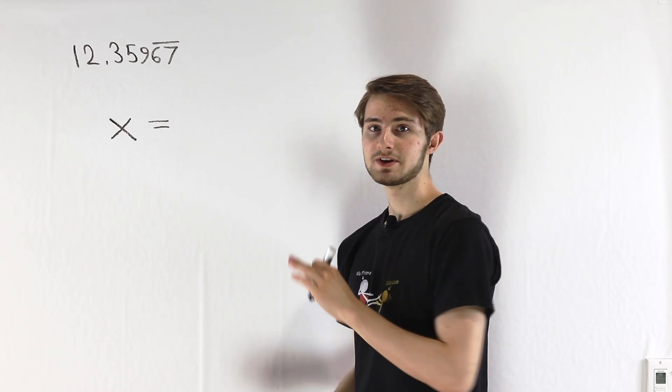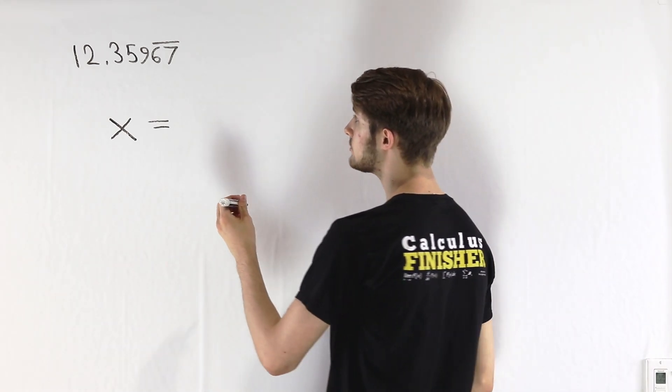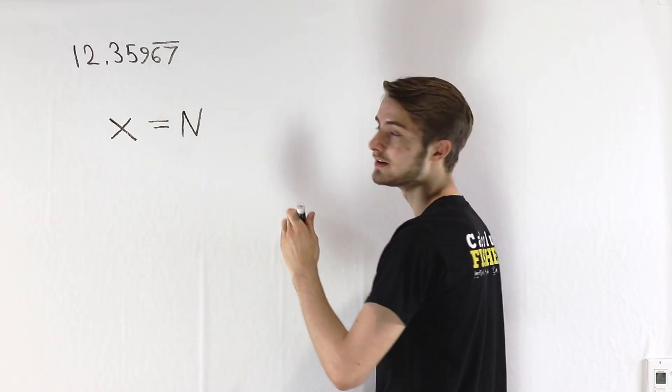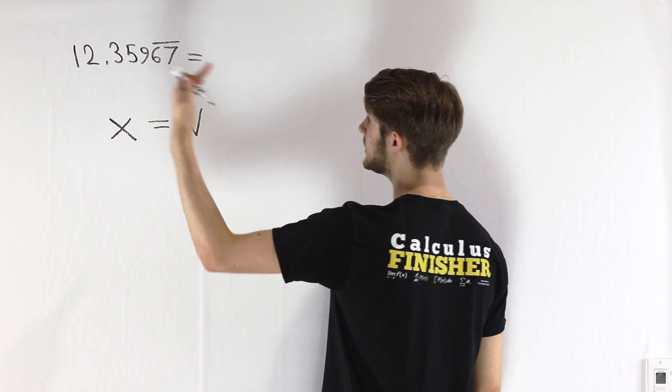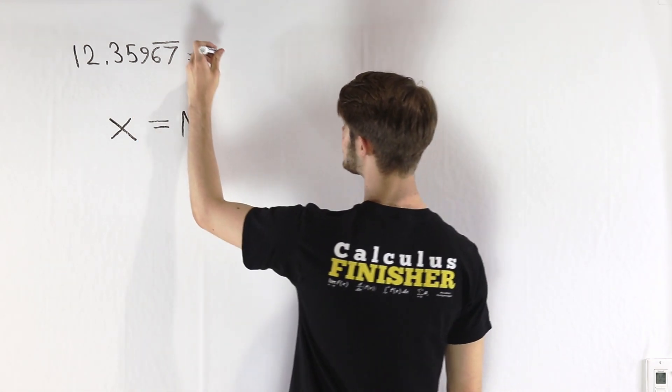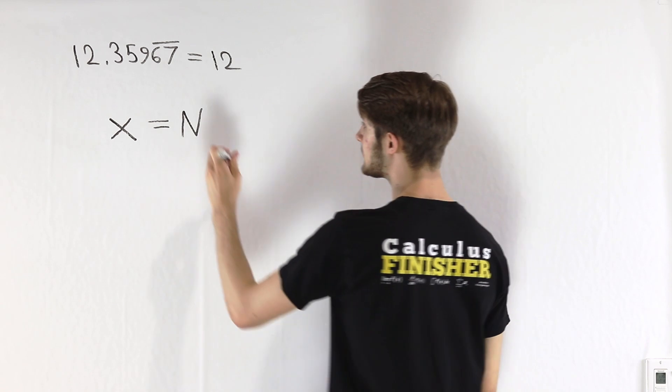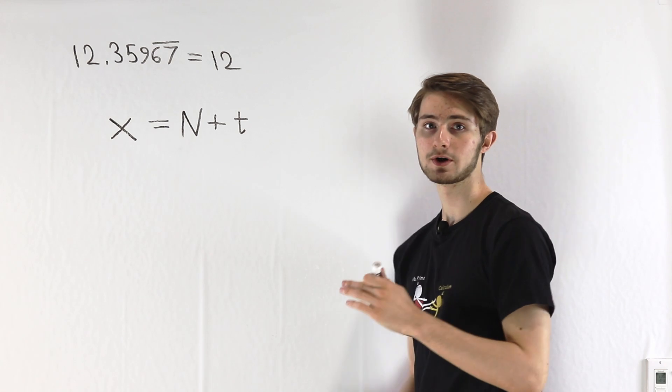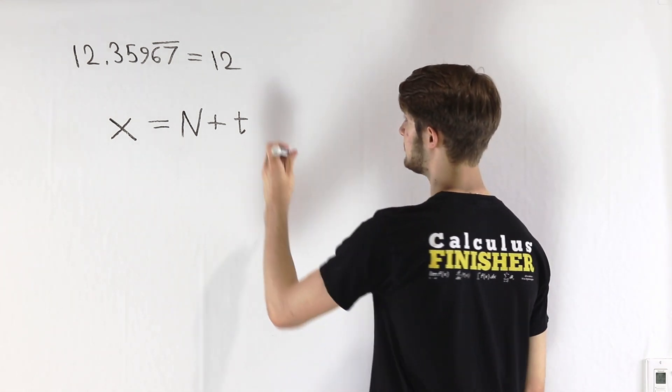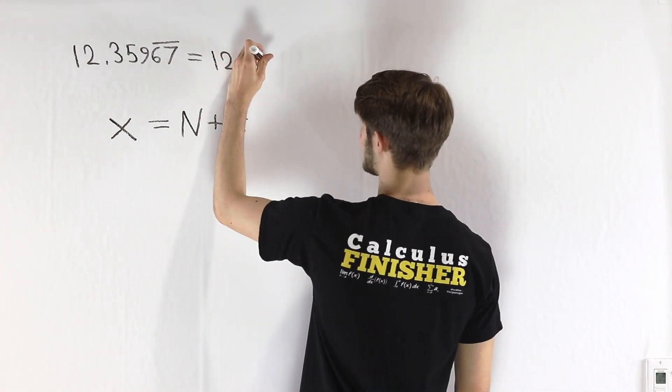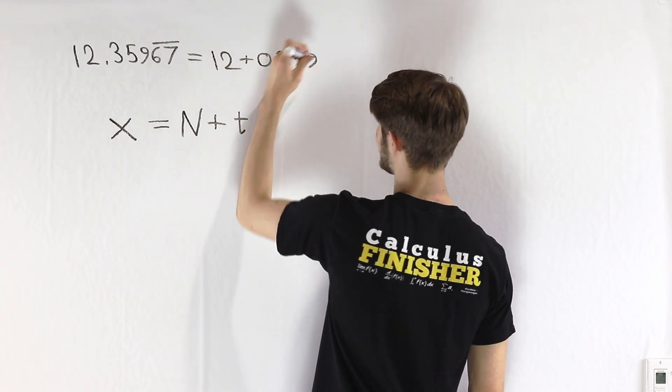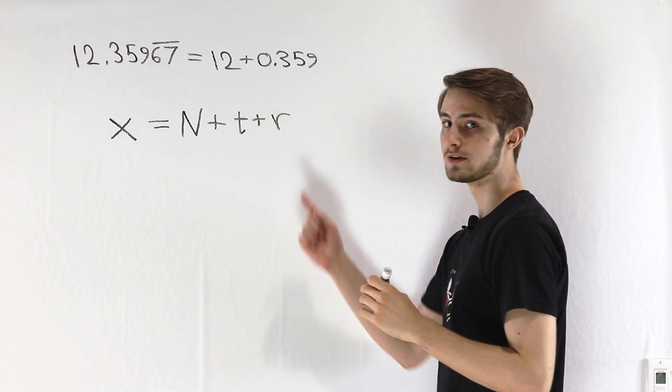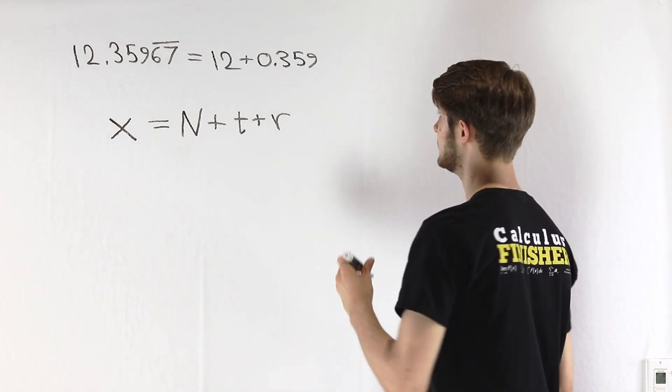We can split up this number into three different parts. The first part is the integer N at the beginning of the number in front of the decimal point. After that we'll have some terminating part T, the part that doesn't repeat in the decimal expansion. In this case we have 0.359, and then after that we have the part we're really interested in, R, which is the repeating decimal part.